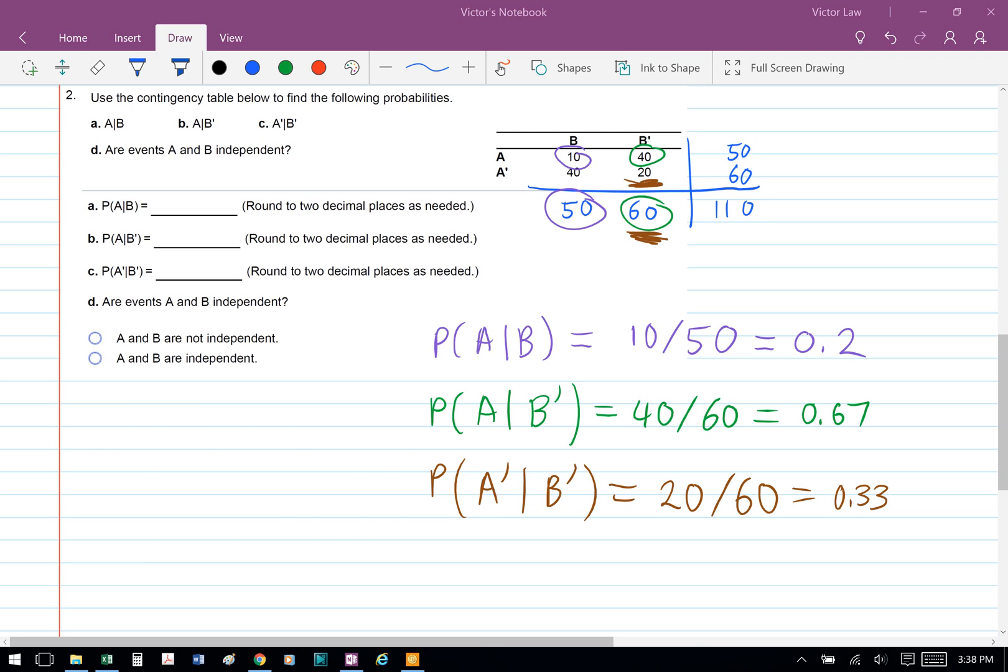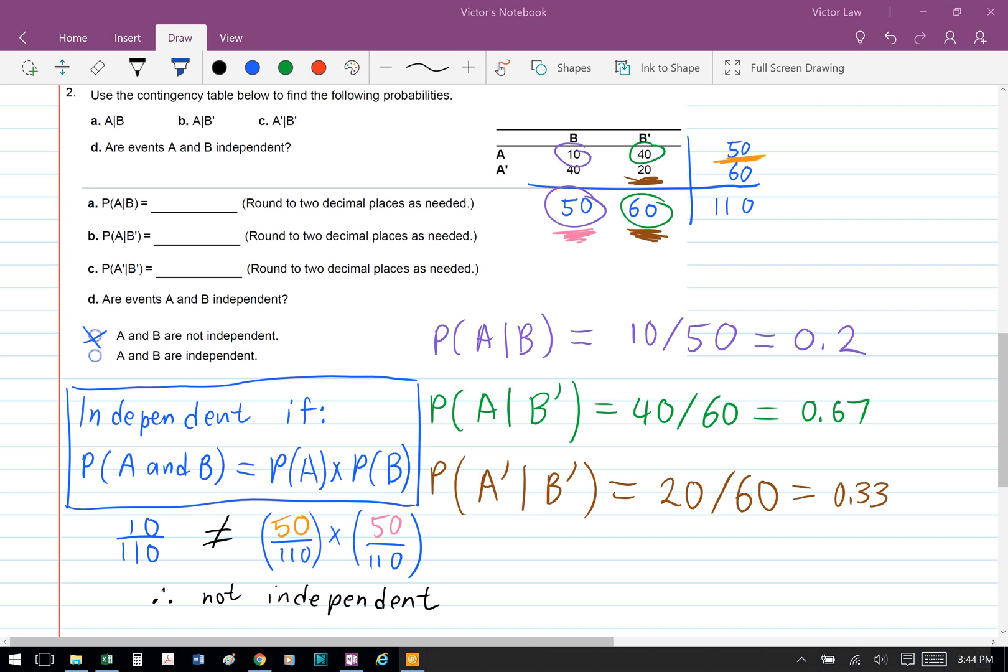Part D: Are events A and B independent? The rule here is that they're independent if probability of A and B equals the probability of A times the probability of B.